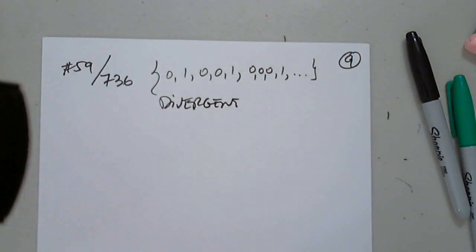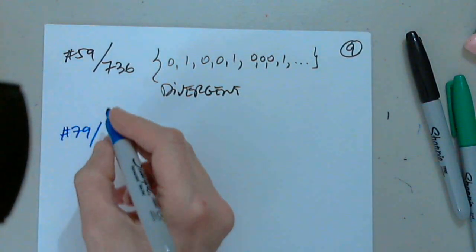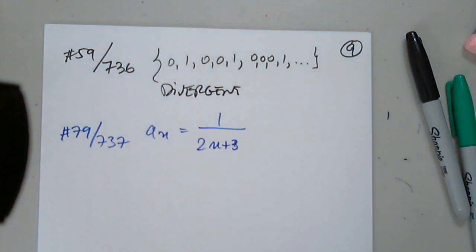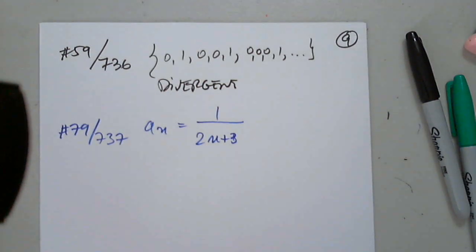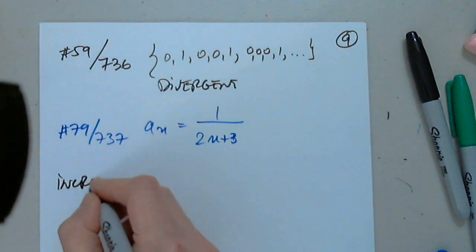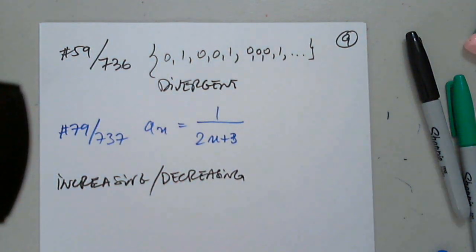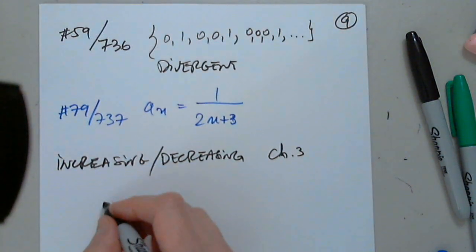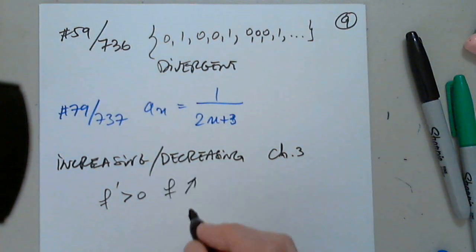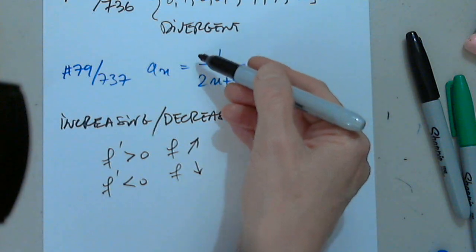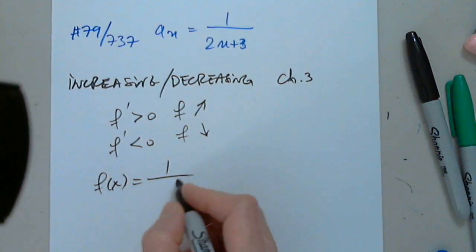Finally, we want to determine whether the sequence is increasing, decreasing — in other words monotonic — or not monotonic, and whether it is bounded. Let's look at 79 on page 737. We have a sub n equals 1 over (2n + 3). From chapter 3, we know that if the derivative of a function is positive the function is increasing, and if the derivative is less than zero then the function is decreasing.